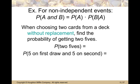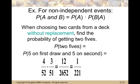Now let's look at non-independent events. When choosing two cards from a single deck without replacement — meaning we're not going to look at a card, put it back, and reshuffle — we draw two cards like you normally would if someone's dealing them to you. We want to find the probability of getting two fives. On the first draw there are four fives in our deck of 52 cards: the five of hearts, five of diamonds, five of spades, and five of clubs.